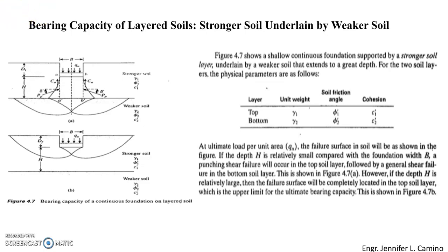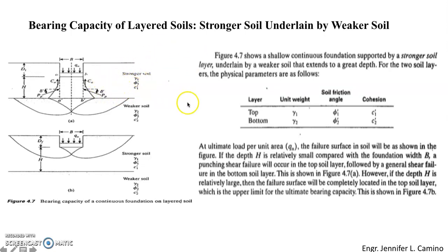This is the bearing capacity of layered soil — stronger soil underlain by weaker soil. We have an illustration for the bearing capacity of a continuous foundation on layered soil showing two figures: stronger soil on top and weaker soil at the bottom. For two-layered soil, the two layers will have different shear strength parameters and different physical parameters such as unit weight, soil friction angle, and cohesion.